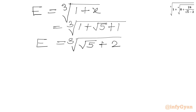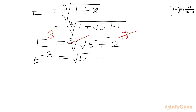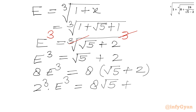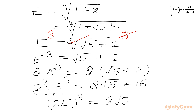Now we will consider cubing both sides, and we can use Simon's favorite factoring trick. Cube root and cube will cancel, so we write e cubed equal to root 5 plus 2. Now I will multiply both sides by 8, so 8 e cubed equals 8 times root 5 plus 2. Now 8 can be written as 2 cubed, and on the right-hand side we get 2e whole cubed equal to 8 root 5 plus 16.